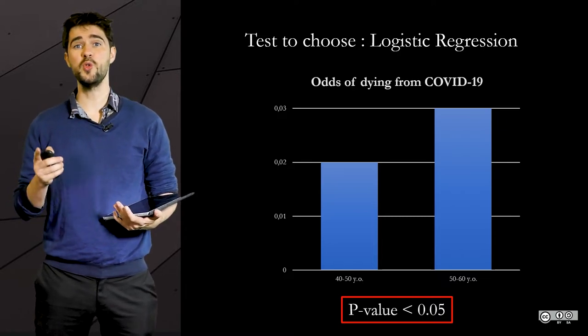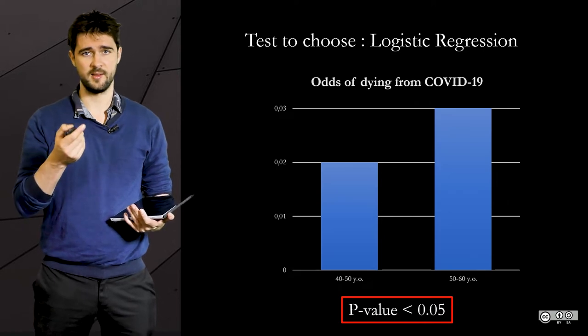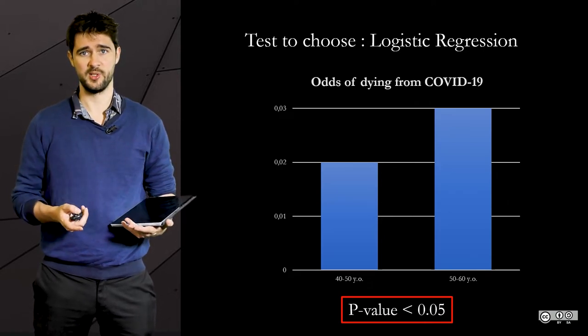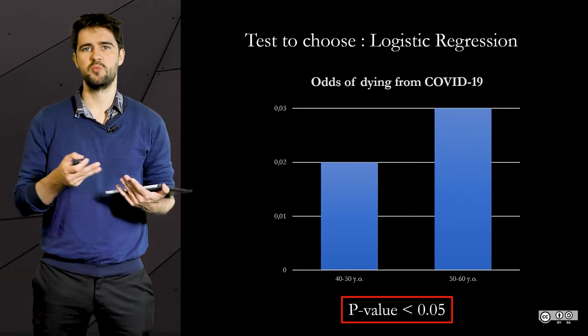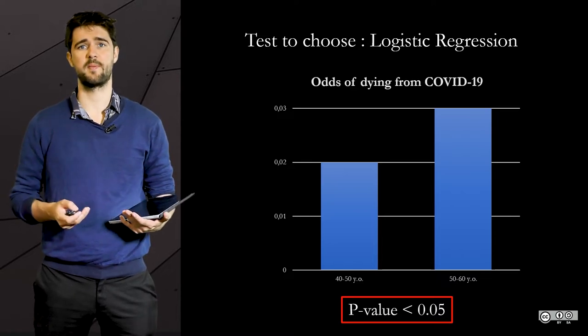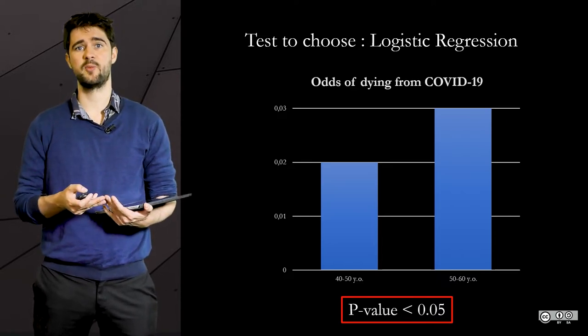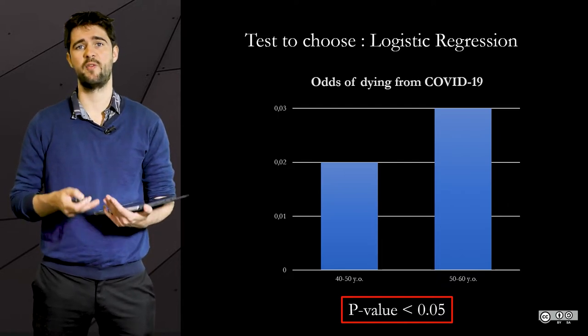But if you used an ANOVA to assess that to get this result, then you'd do a mistake. And the test would become misleading because it would give a false sense of reliability.